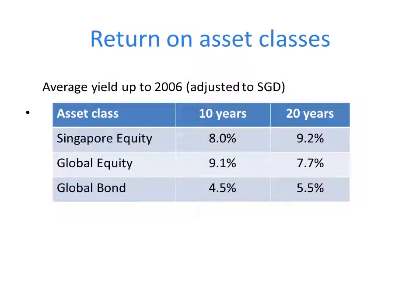Here are the returns on the various asset classes for the past 10 and 20 years. Singapore equities gave a return of 9.2% per annum over the past 20 years. This is higher than global equities, which returned 7.7%, and global bonds, which returned 5.5%. You can see that equities gave quite an attractive return, higher than bonds.